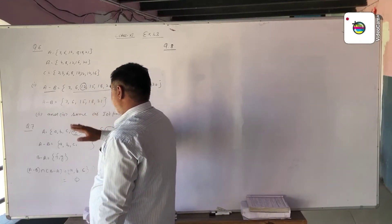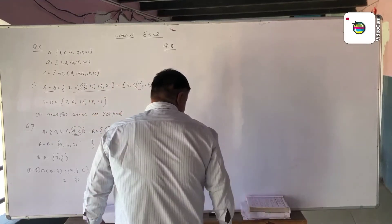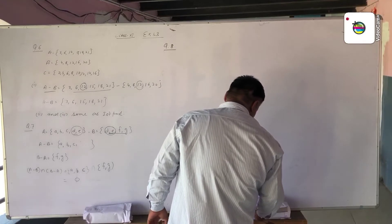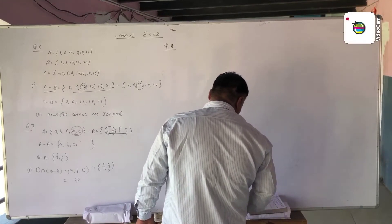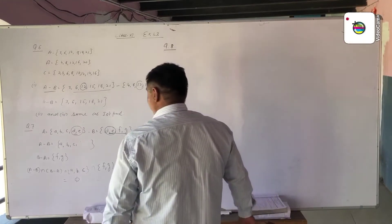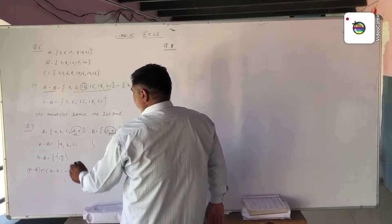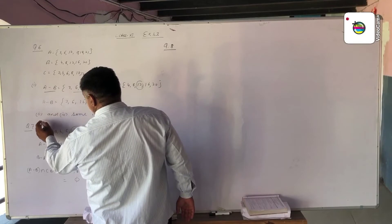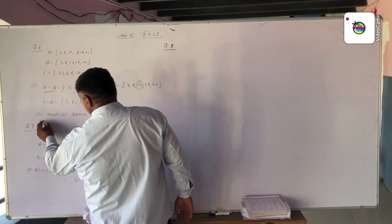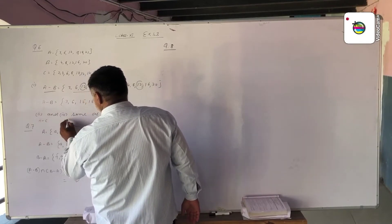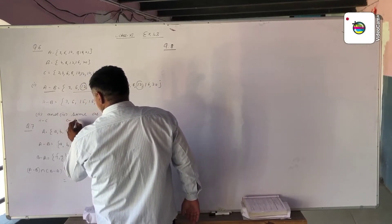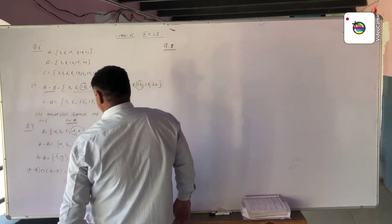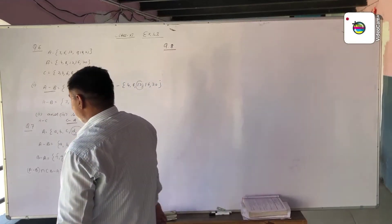Now the second part says that we find A difference C and C difference A. These are done in the same way as the first part.